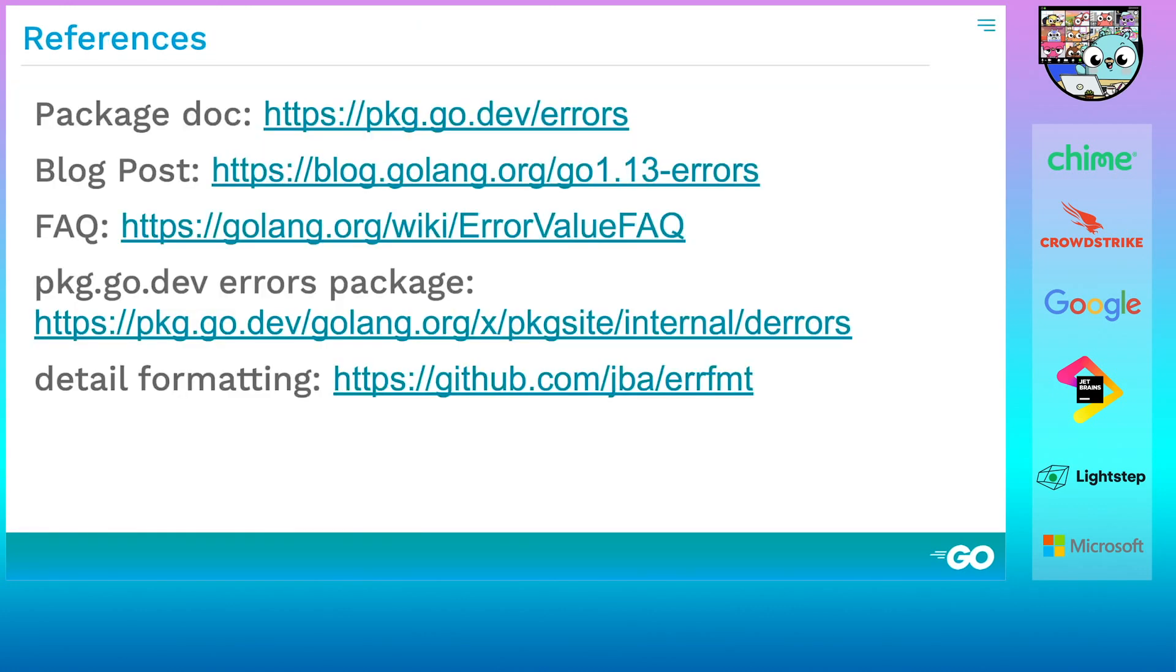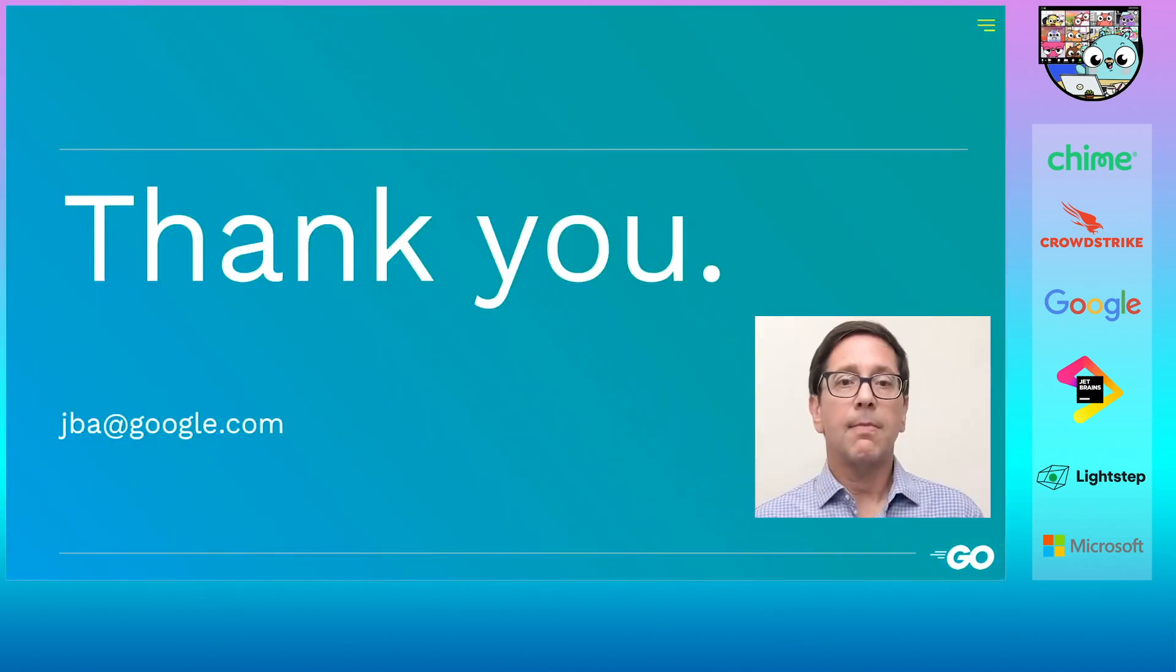Which brings me to the end of the talk. Here are links to the package documentation for errors, and a blog post and a FAQ that we wrote. You can find the package.go.dev errors package I talked about in the package-side repo. And lastly, there's a link to a repo of mine with the full formatting code I just showed you. Feel free to email me with any questions or comments at jba at google.com. Thank you very much.